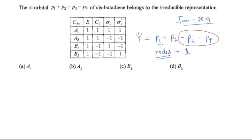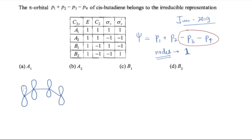Since there is one node, let's make this particular wave function. Since it is cis-butadiene, let me draw it. The orbitals will look like this: shading the positive sides, you will have one node. This is the molecular orbital for cis-butadiene with the lobes represented accordingly.